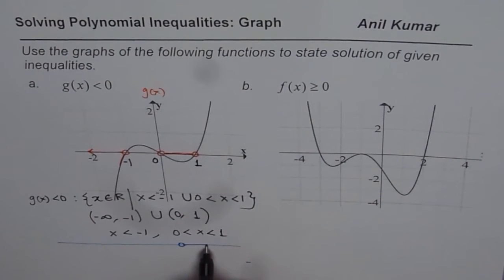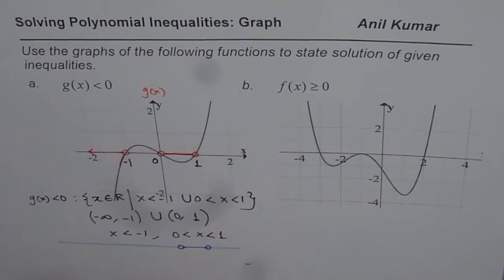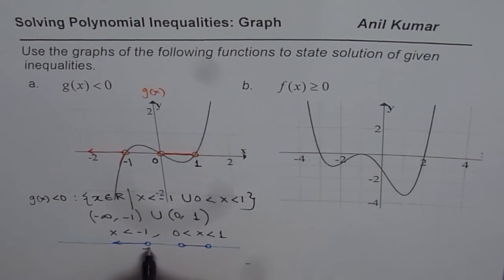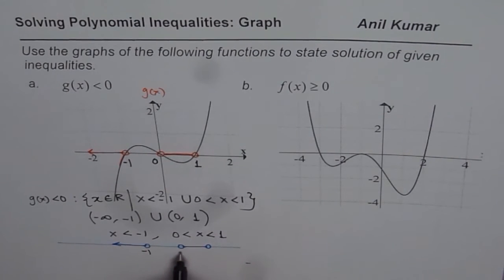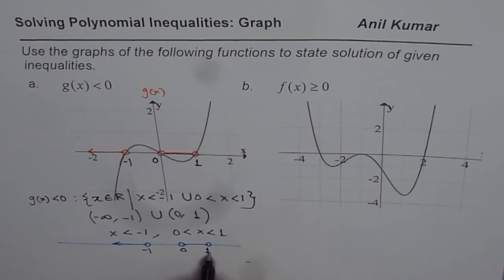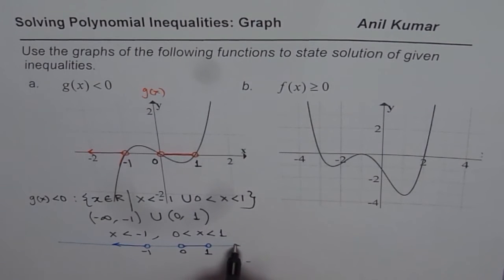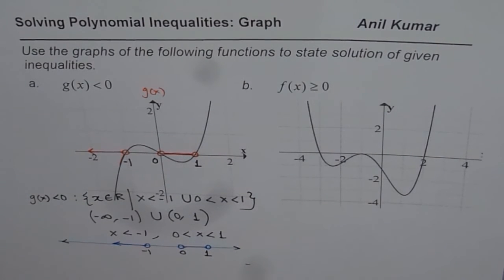So on a number line, we will show it like this, as I have shown here. So we can say that is the part of our solution, where this point is minus 1, so it is less than minus 1, and it is between 0 and 1. So that is the number line for us. Do you get the idea?